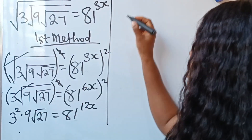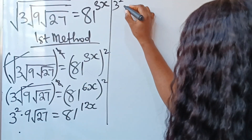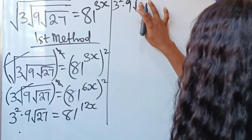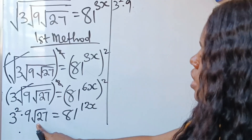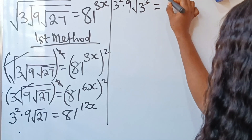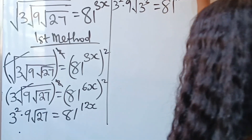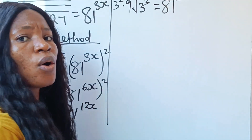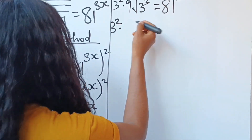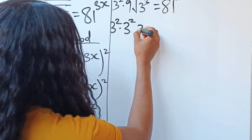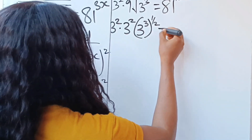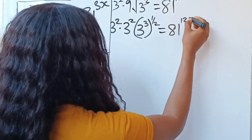So what do we have here? We have 3 squared multiplied by 9 times root of 27. Now, root 27 can be written as 3 to the power of 3, right? So this is 3 to the power of 3 raised to the power of half, all equal to 81 to the power of 12x.